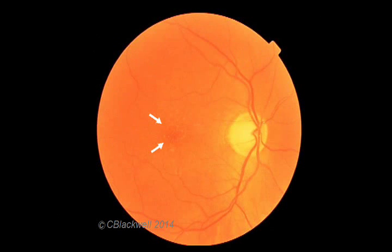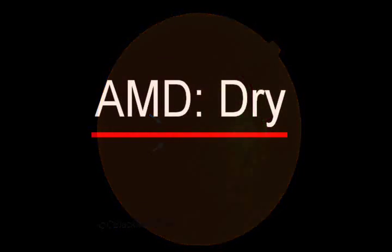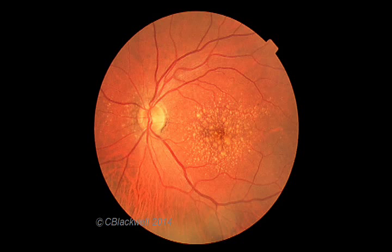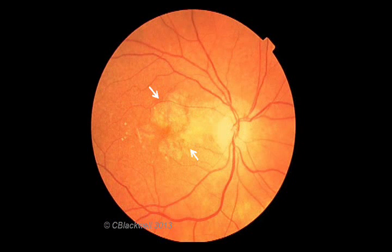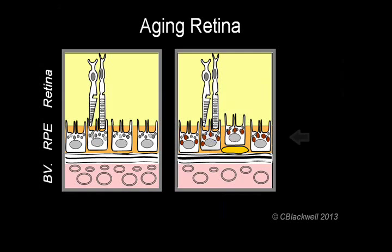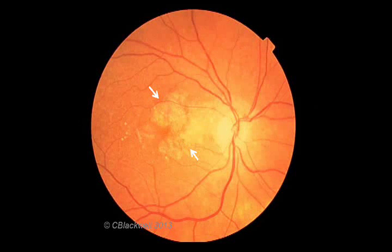Here we return to the retinal photos, noting the small drusen. Everyone gets some deposit of waste products over time, but it does not necessarily advance to macular degeneration. Here the drusen are shown as larger and more numerous. As macular degeneration advances, the pigment cells eventually die, which results in the pale areas indicated by the arrows. On a cellular level, as the pigment cells die, so do the photoreceptors they support.